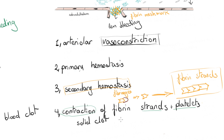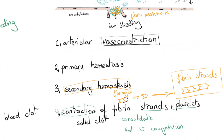Eventually, the fibrin strands and aggregated platelets contract to further consolidate the plug. In the fourth step, we also limit coagulation and clot formation so that we don't stop blood flow by forming too large a clot.